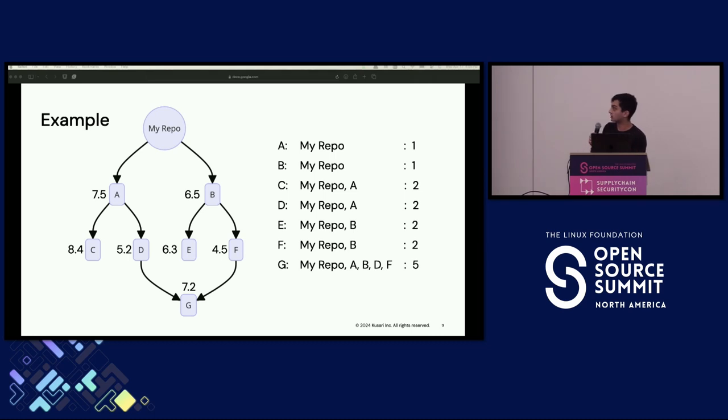The scorecard scores in this example are displayed next to the nodes. But, now we've got an issue. We've got package G with five packages depending on it and a scorecard score of 7.2. And we've got package F with two packages depending on it and a scorecard score of 4.5. How do I know which is more risky? So, to solve this, we have decided to come up with an upcoming feature where we take all the metrics and group them into a single score so that it's easy for you to know what is your most risky package.